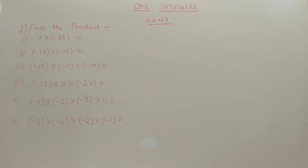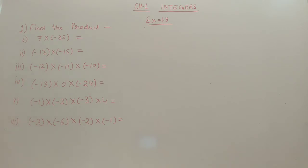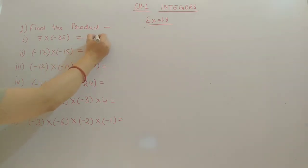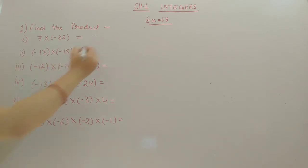Now we will start Exercise 1.3. The first question is to find the product — that means you have to multiply the numbers. The first one is 7 into minus 35. Since 7 has no symbol, it means 7 is positive. So plus into minus will be minus, and 7 into 35 gives 245. The answer is minus 245.